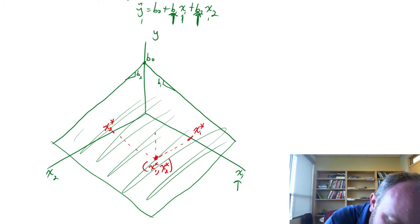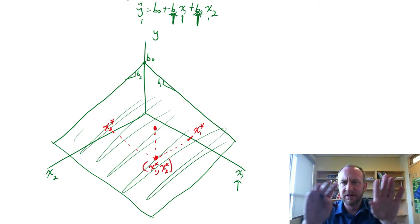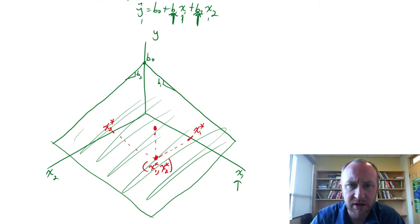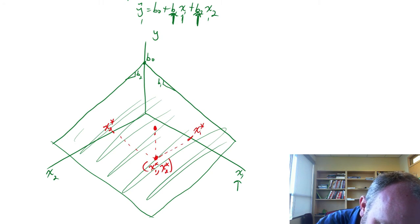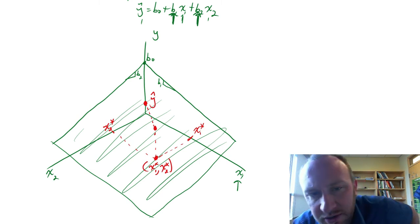And so now here I have a point on that x1, x2 plane. So this is a set of coordinates, x1 and x2. And then that comes up, and maybe that connects, maybe that's sitting on the surface, that green surface somewhere around there. And then we draw a line back to that y-axis, that gives us then our predicted value.